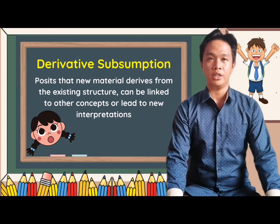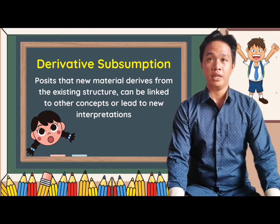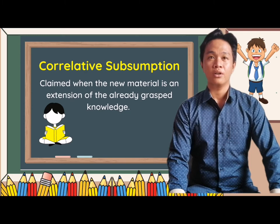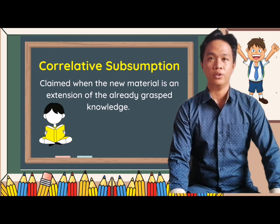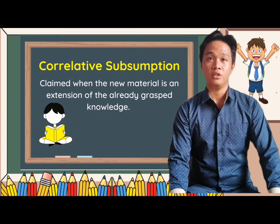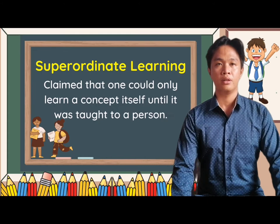Derivative subsumption means the new material derives from the existing structure and can be linked to other concepts or lead to new interpretations. Second is correlative subsumption. This occurs when the new material is an extension of already grasped knowledge. For instance, you have learned about a new kind of bird through the process of derivative subsumption. Correlative subsumption is considered more valuable than derivative subsumption since it enriches rather the higher-level concept.